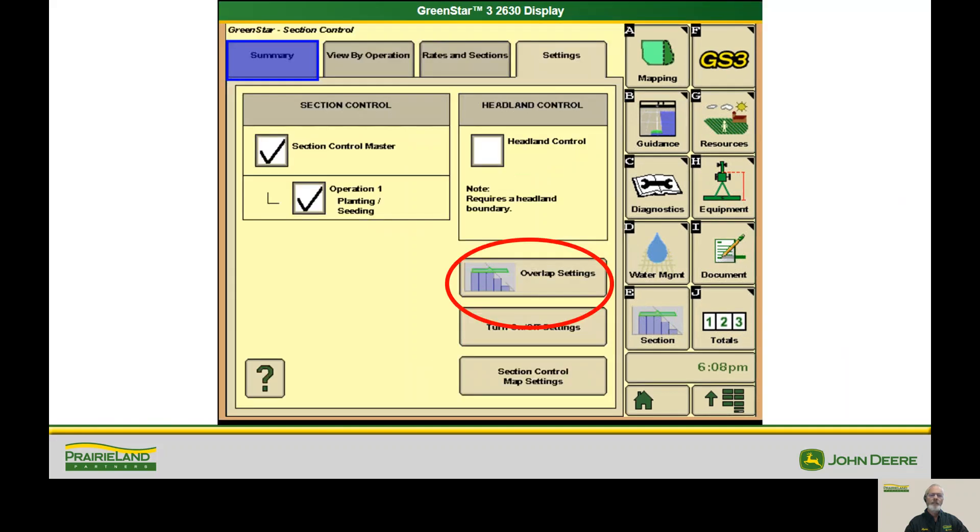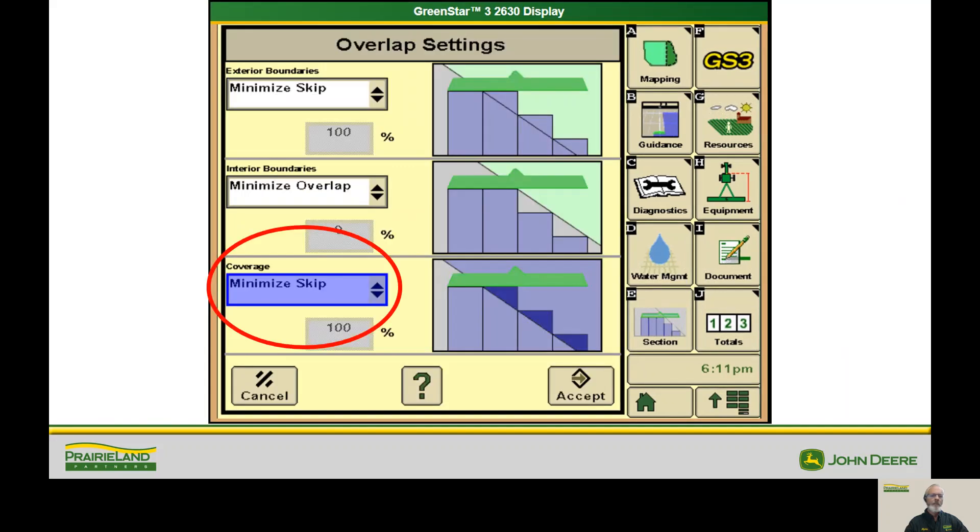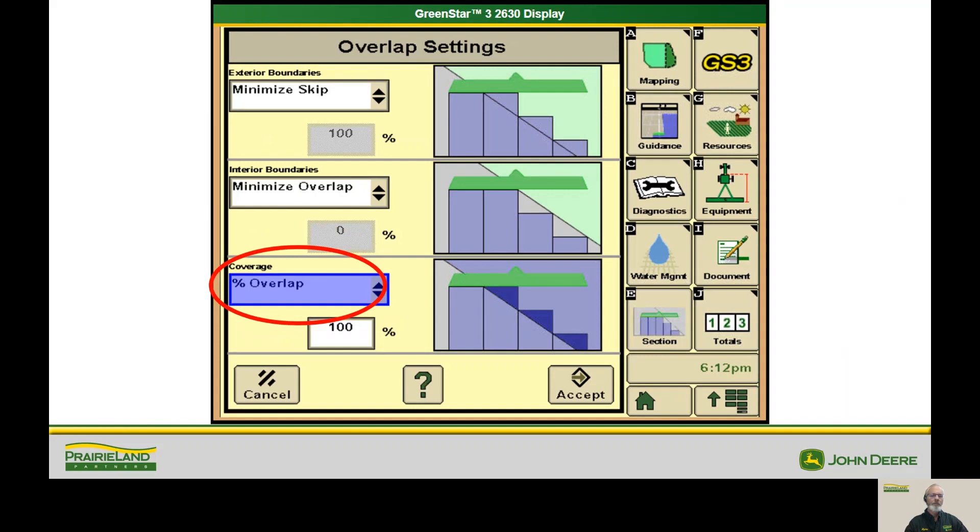So once we've done that, we're going to go to overlap settings. What comes up normally on your coverage on the bottom here is minimize skip, but I want you to do something a little differently here. I want you to change that to percent overlap. Now, as you make a pass and you stop and you get out and dig and see where the seed is, you might notice that you need to make a change. Well, now that we've got our turn on and turn off times consistent going in and going out,